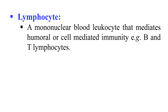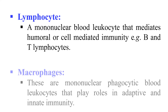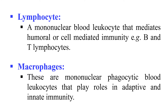Next, Lymphocytes. These are mononuclear blood leukocytes, and they mediate the humoral and cell-mediated immunity. They include B lymphocytes and T lymphocytes. Macrophages are phagocytic blood leukocytes that play a very important role in adaptive immunity because they phagocytose the antigens and protect us.